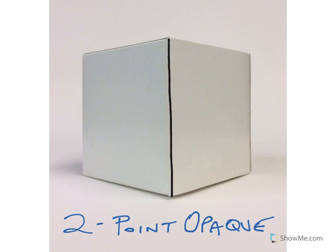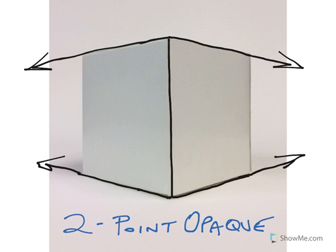The lines that move away from us are drawn as orthogonals. Here you can see I've drawn in four orthogonals, two going from the top and two going from the bottom.